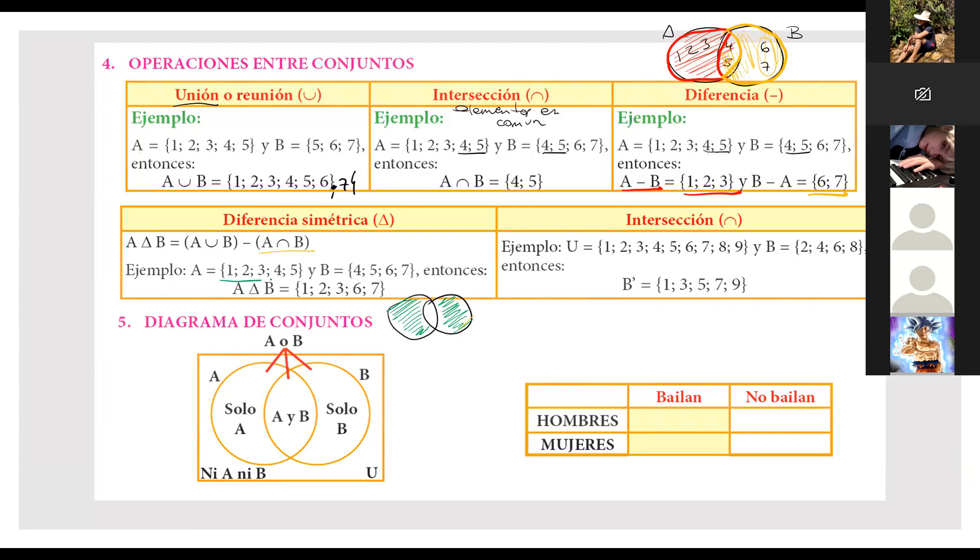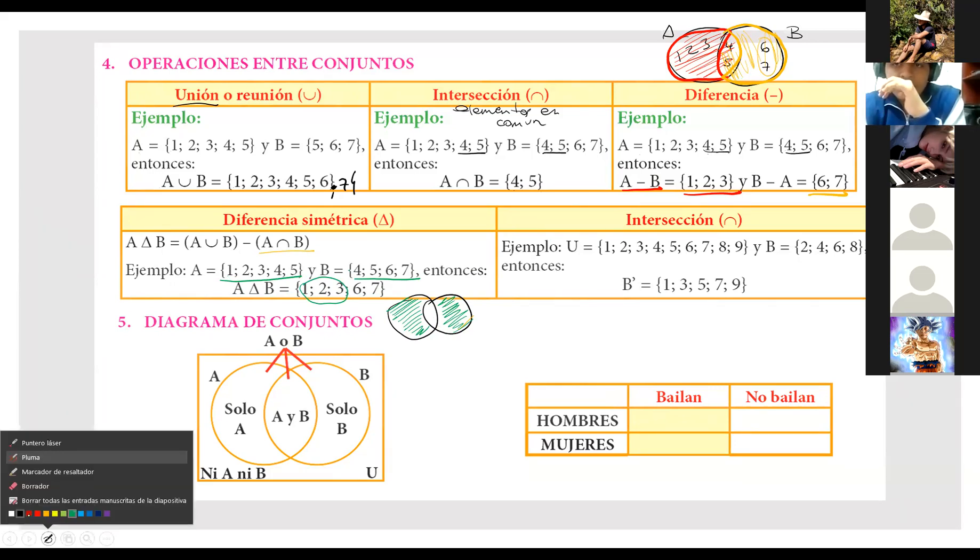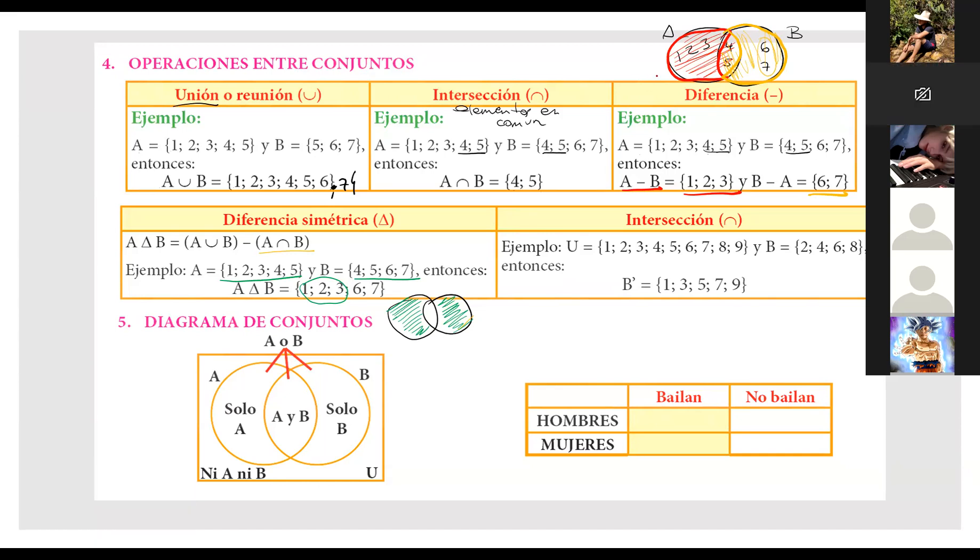Listo. Vemos el ejemplo. Dice, del 1 al 5, 4, 5, 6, 7. Entonces dice, la diferencia simétrica sería 1, 2, 3. ¿Ya? Que vendría a ser... Estos dos conjuntos son los mismos de los anteriores, ¿no? Entonces, miren el ejemplito que estaba por acá. Le decimos, 1, 2 y 3 se encuentran acá. 6 y 7 se encuentran acá, ¿no? Le decíamos, 1, 2, 3, 6 y 7, ¿no? Todo lo de verde está acá. ¿Sí? Bien, a veces se ve mejor gráficamente. ¿Ya? Y bien, último.